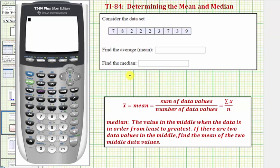For the first step we want to enter the data, so we press STAT and then ENTER. Notice how we have some old data in L1. We'll go to the top of the column, press CLEAR and then ENTER. This clears the entire column. Now we'll enter the data in L1: seven, enter, eight, enter, two, enter, and so on.